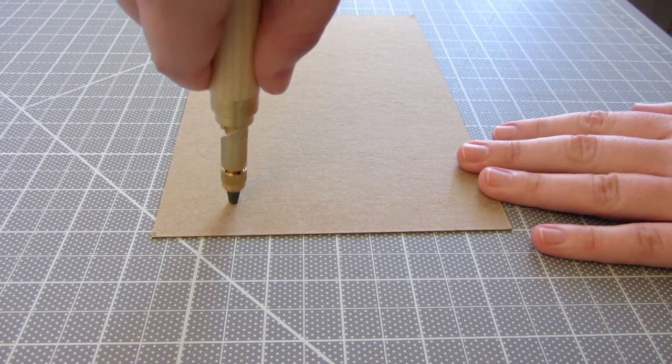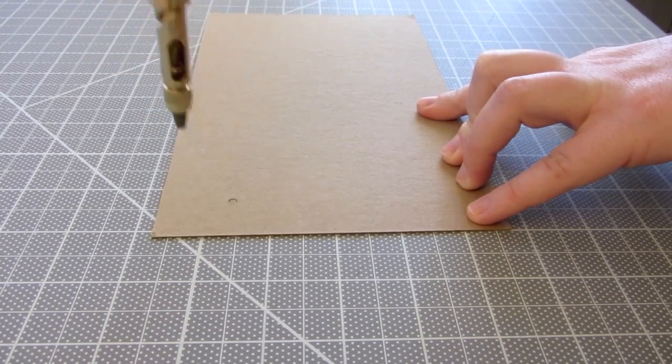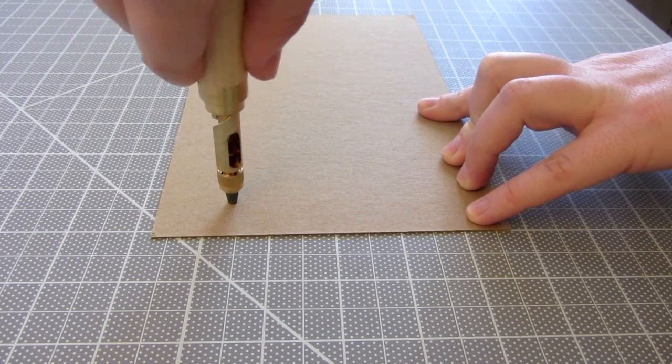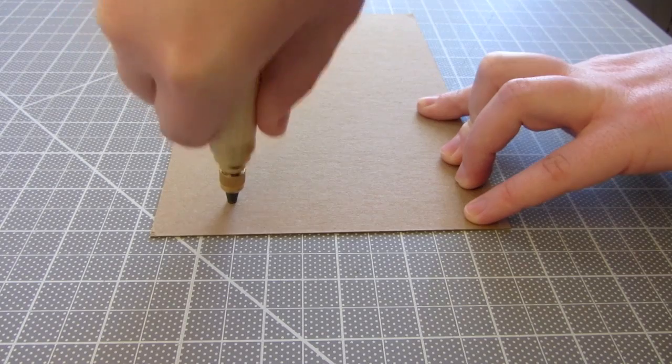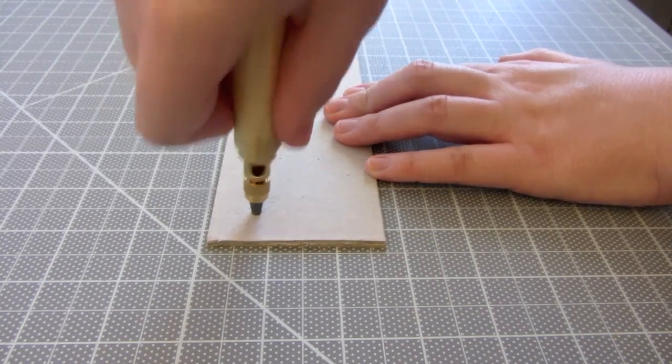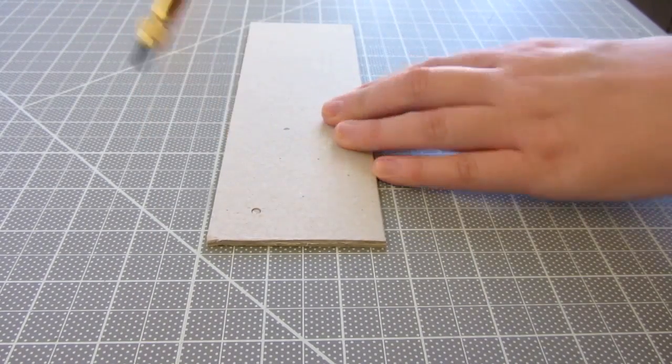To make holes, you just push it all the way down like this. It can go all the way through about 1mm board with a couple of goes, but any thicker you have to push it down many times.